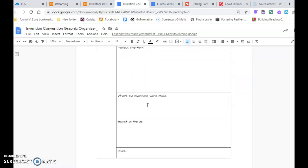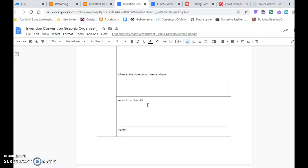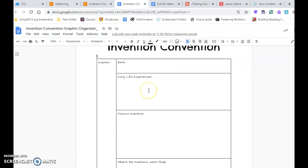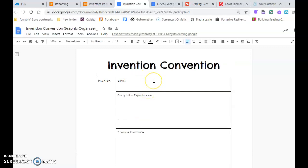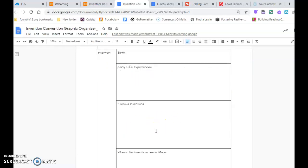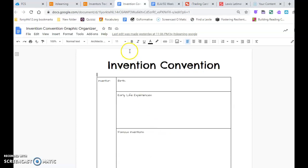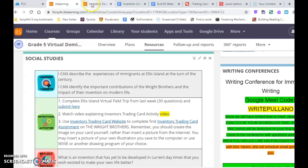early life experiences, famous inventions, where the inventions were made, the impact on the United States, and their death. You'll see when they were born and when they died. And so you're going to fill this out five times this week. And you're going to hang on to it till the end when you submit it.